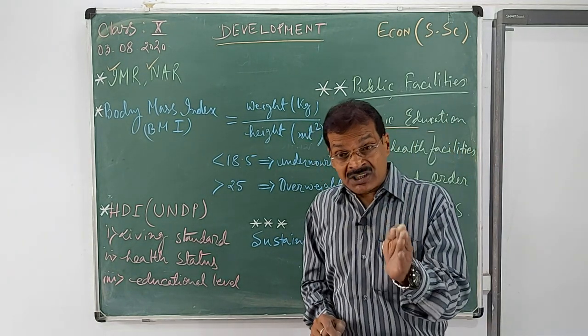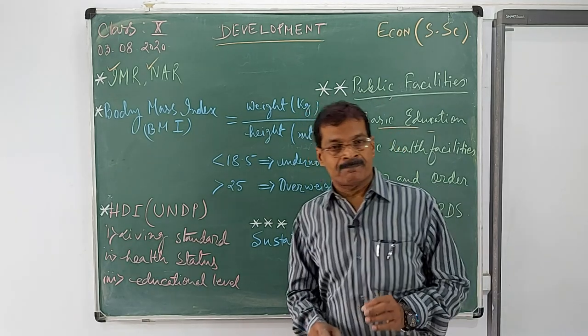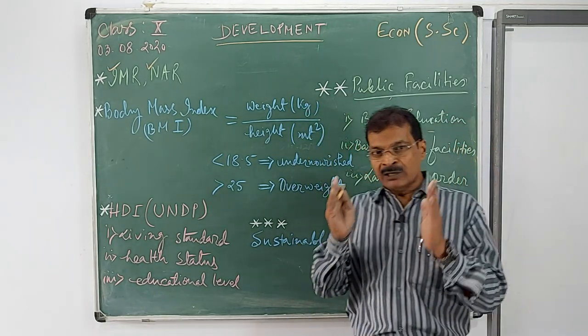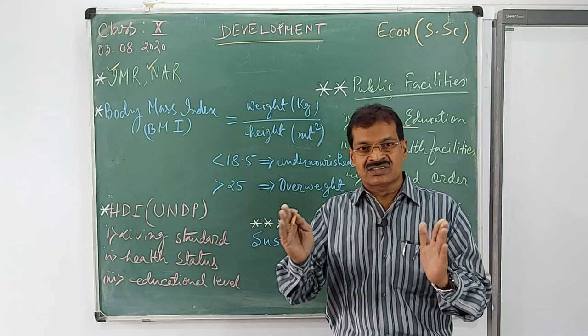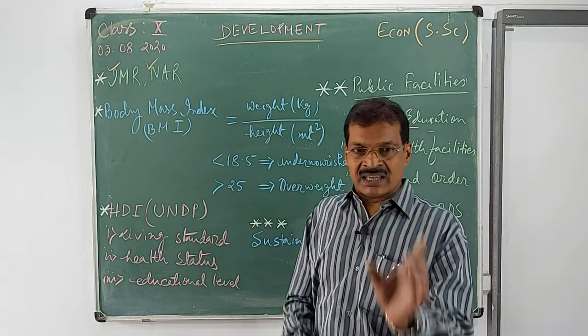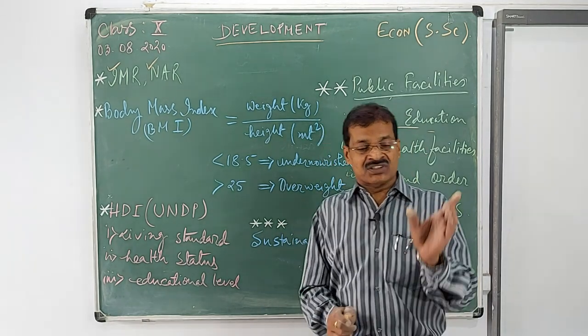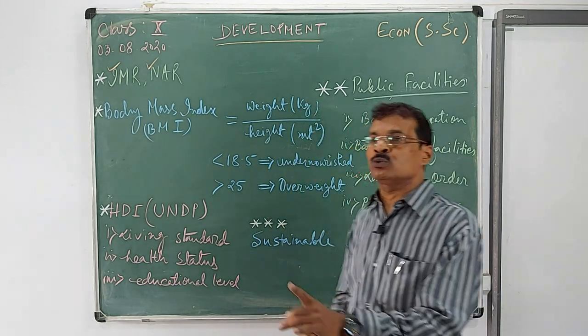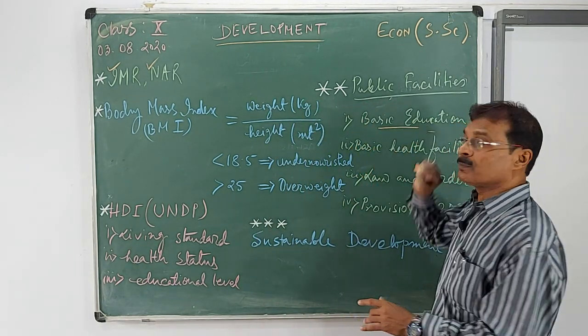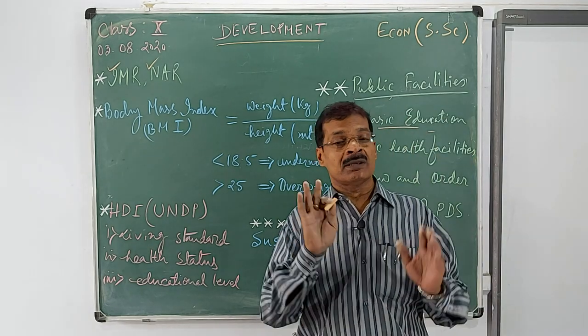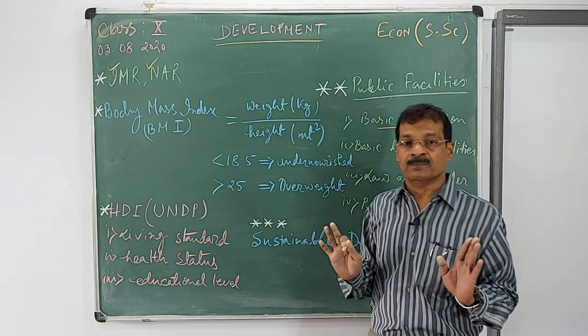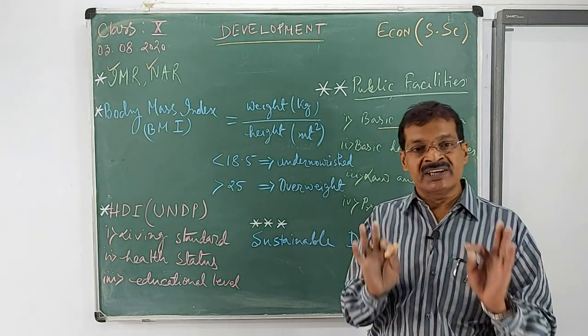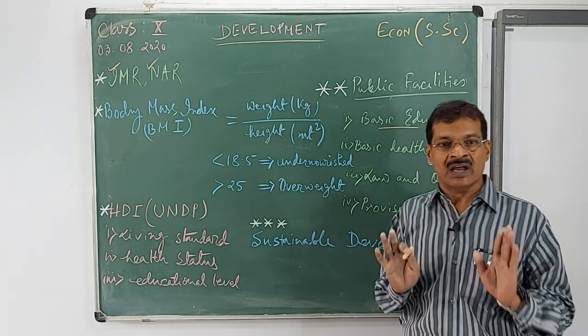Underline this: free and compulsory education to each child of which age group? 6 to 14. That means each and every child having 6 to 14 years of age should get free and compulsory education, and that is called basic education which should be imparted free of cost. Nowadays we know that mid-day meal system is there in the government schools so they could get the nutritional food.